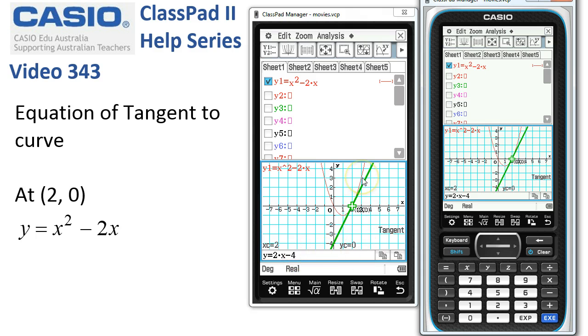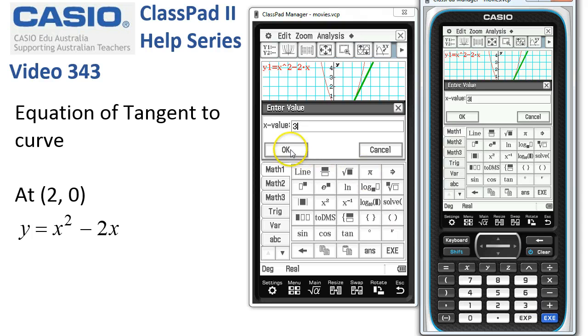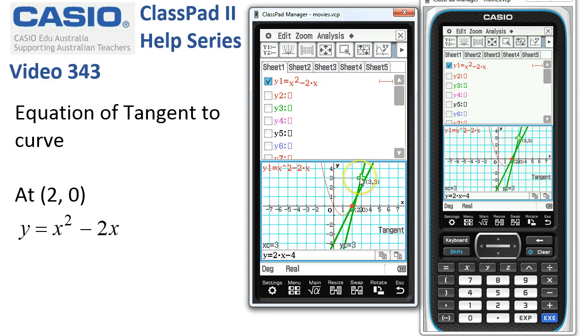And we can move around and draw another tangent at 3 by the same process. If I tap 3, OK. ClassPad moves around at 3. I can tap execute. It calculates the equation of the tangent there. And it's leaving behind a trail of tangents here. And that's it.